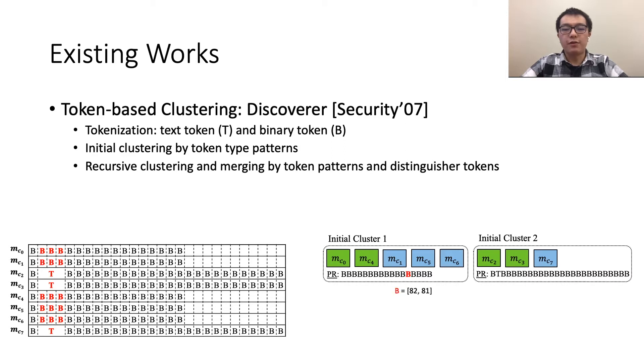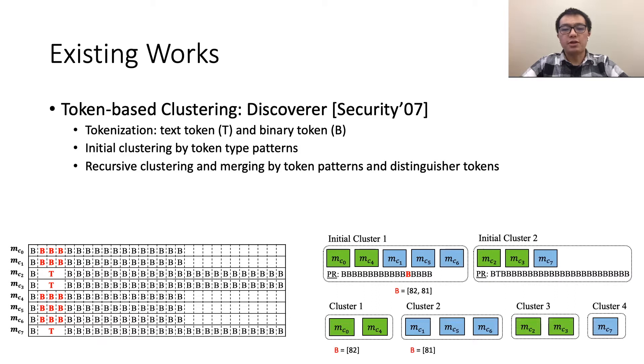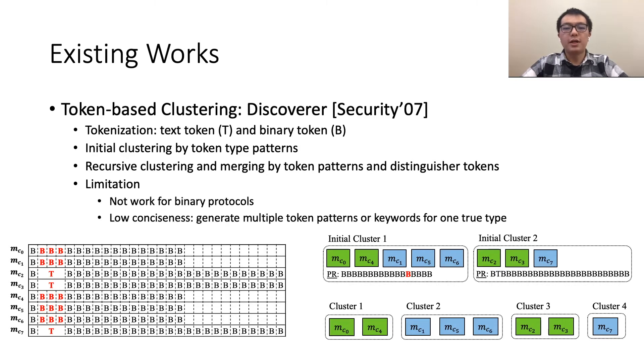For example, in the first initial cluster, the token B in red contains only two different values, 0xD2 and 0xD1, which is likely denoting two different types. Thus, Discoverer generates two sub-clusters by the value of this token. It is the same for the second initial cluster. Although there is only one type in each cluster, each ground truth type denoted by the colors is sub-optimally divided into two smaller types. This is because in binary protocols, most bytes are considered as individual tokens and little structural information is exposed. Also, there could be multiple distinguishable tokens, which leads to excessive clusters.